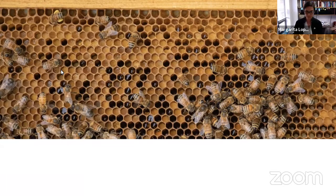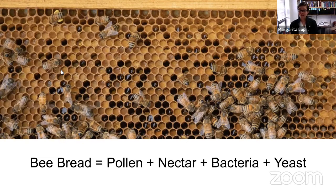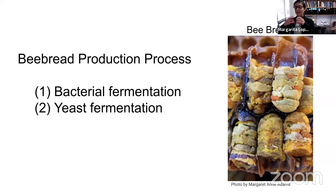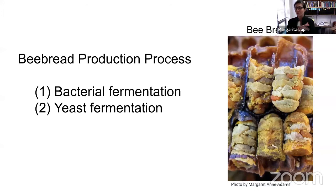So we've been talking about pollen and nectar, but we haven't mentioned bee bread. What is bee bread? Bee bread is actually the mixture of pollen and nectar that the bees bring back to the colony, but it also involves the microbial activity of bacteria and yeast. As shown in the photo to the right of the slide, bee bread looks like layers inside the cells — it's not a homogeneous mixture. Bees bring individual pollen loads, stored in layers in the cells, then cover them with honey. This is when the production of bee bread begins.